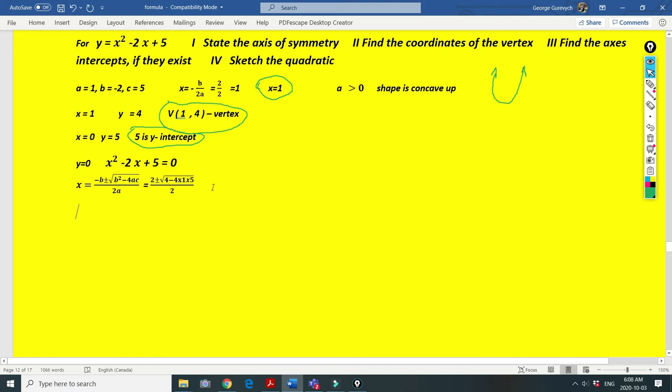So we can sketch it, our graph. Our vertex. Our axis of symmetry is x equals 1.